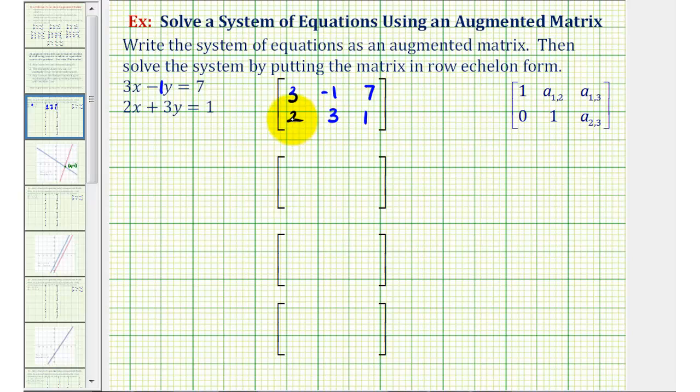Notice how the first column came from the coefficients of x, the second column from the coefficients of y, and the third column from the constants. Now in most cases we can use this form for row echelon form, but let's go ahead and review the specifics about row echelon form.